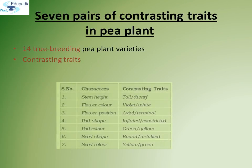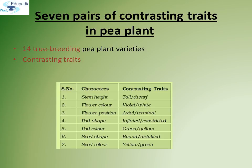He selected 14 true breeding pea plant varieties as pairs which were similar except for one character with contrasting traits. For stem height, he studied tall or dwarf. For flower color, he studied violet or white. Flower position: axial or terminal. Pod shape: inflated or constricted. Pod color: green or yellow. Seed shape: round or wrinkled. And seed color: yellow or green.